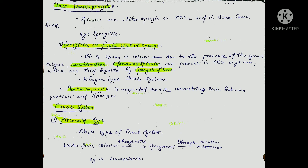For the canal system, there are three types: first is Ascon, second is Sycon, and third is Leucon.